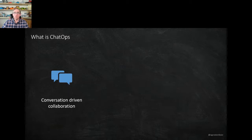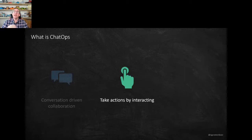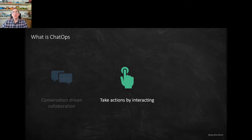ChatOps is about conversation-driven collaboration — it's not just saying a command, it's really having a conversation. You say 'I want to do this, can you do this for me?' and the chatbot comes back asking for information or confirming your intent. You can take actions by interacting with the chatbot — start a deployment, create a ticket, create a resource — and it executes the right scripts and automates everything behind the scenes.